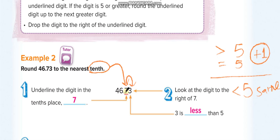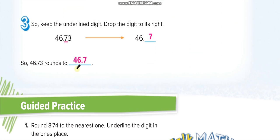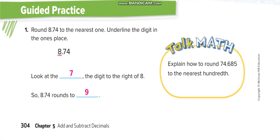So here, the next digit is less than five, so we keep the underlined digit the same. The answer is 46.7. The digits before the underlined digit stay the same, and all digits after the underlined digit become zeros. The answer is 46.7 because the next number is less than five.